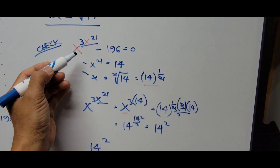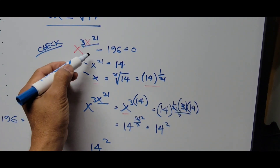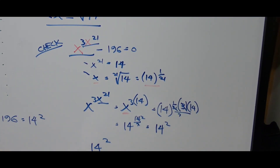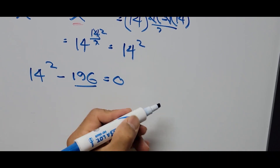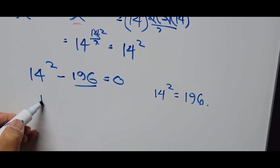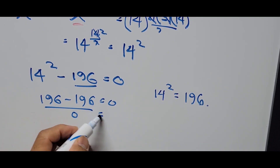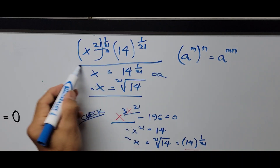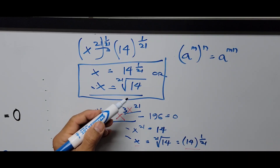From the original equation: x raised to 3x raised to 21 minus 196 equals 0. Using that value — equivalent to 14 raised to the second power — minus 196 equals 0. Since 14 squared equals 196, this simply means 196 minus 196 equals 0, so 0 equals 0. That confirms the value of x is 14 raised to 1 over 21 power, or the 21st root of 14.